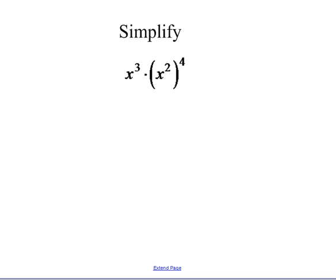If I think about x cubed times x squared to the fourth — I have x squared, and then another x squared, and another x squared, and another x squared, because that's what it means to be to the fourth power. You take that thing and multiply it by itself four times. Using the addition property, I add the exponents: 2, 4, 6, 8. So this is x to the eighth.